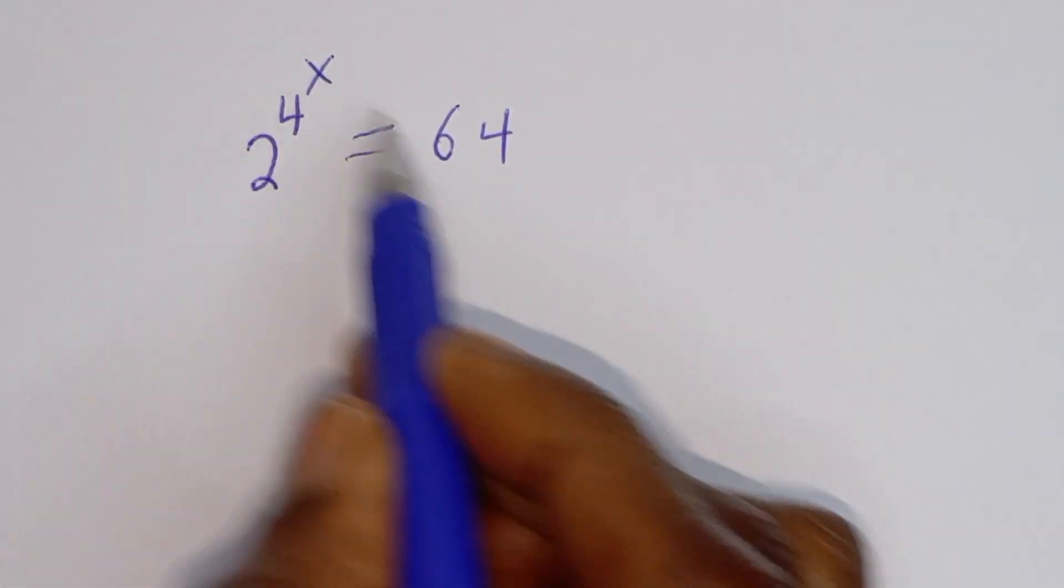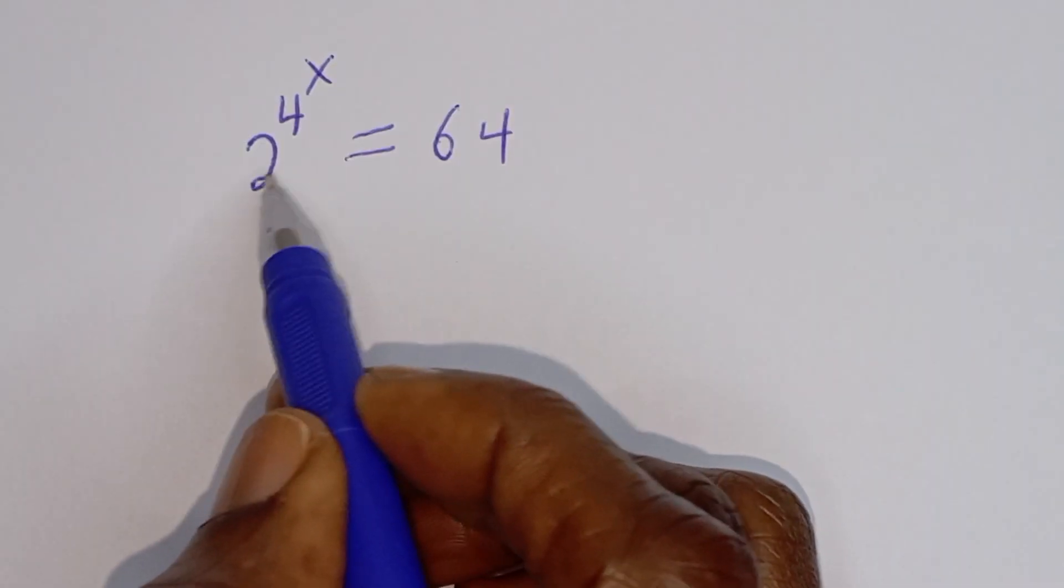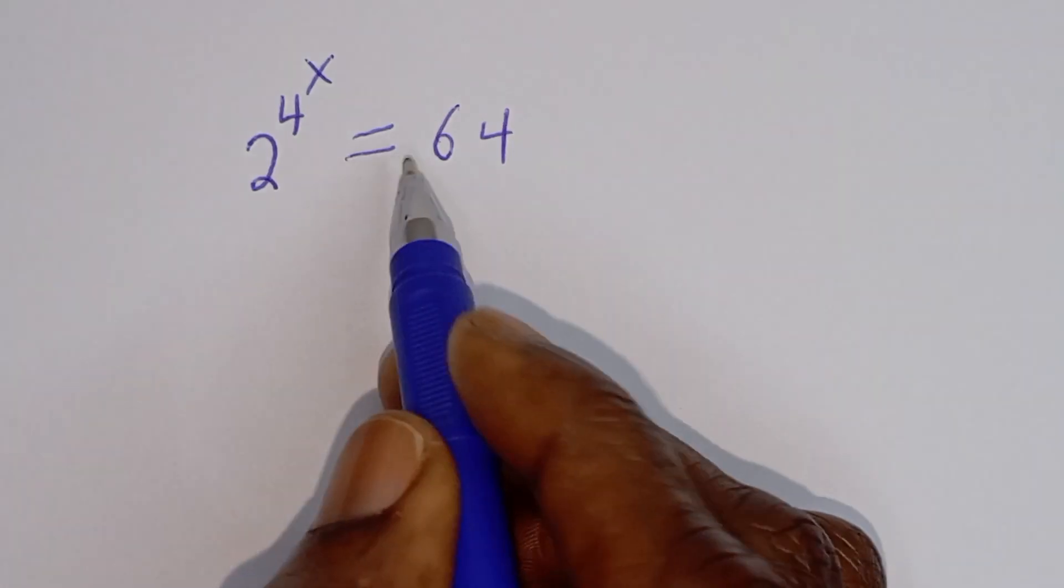Hello, how to solve for s from this given equation 2 to the power of 4 to the power of s is equal to 64.